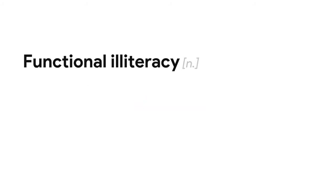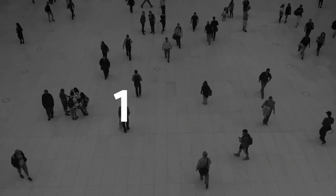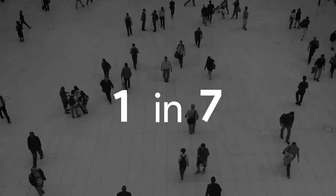The concept of functional illiteracy is based on the UNESCO definitions, which cover a continuum of proficiency levels rather than a dichotomy. Functional illiteracy — the inability to understand texts on more than a basic level — is the reality for one in seven people worldwide.